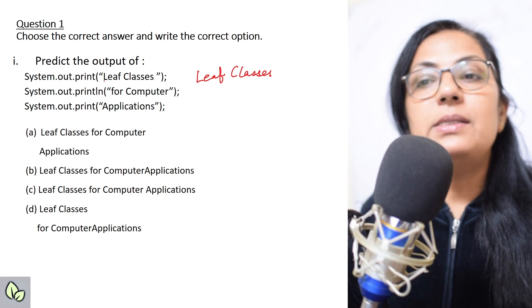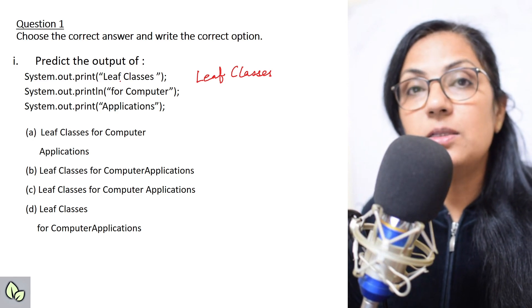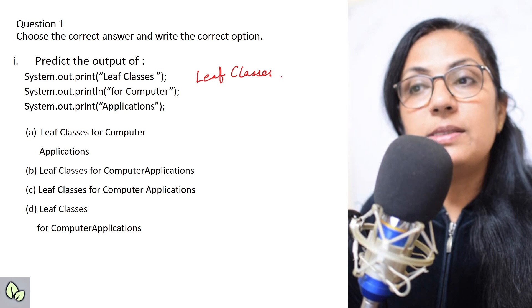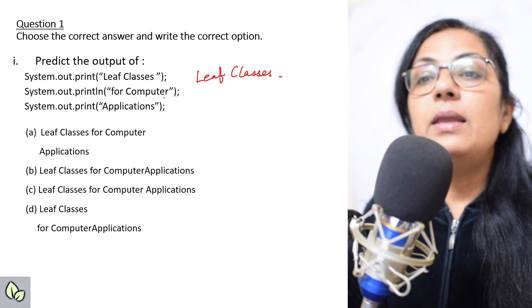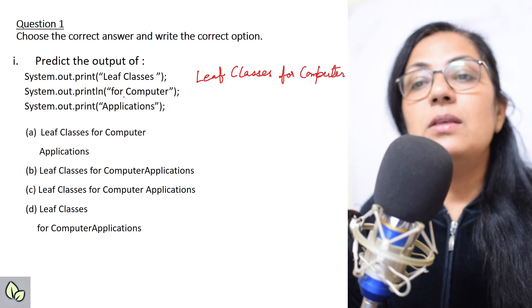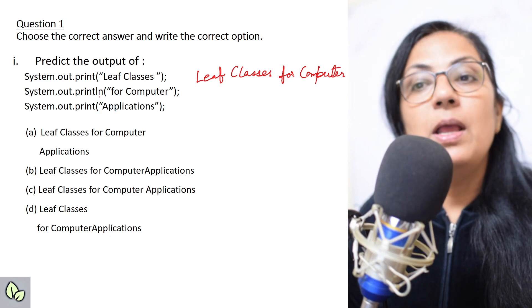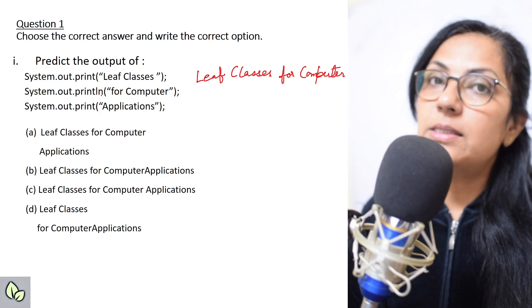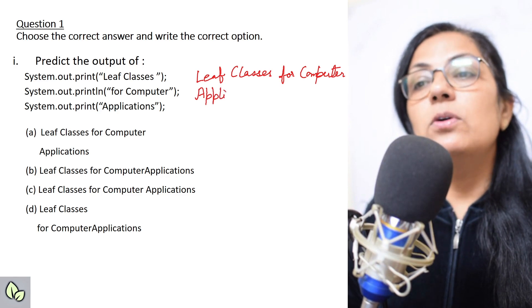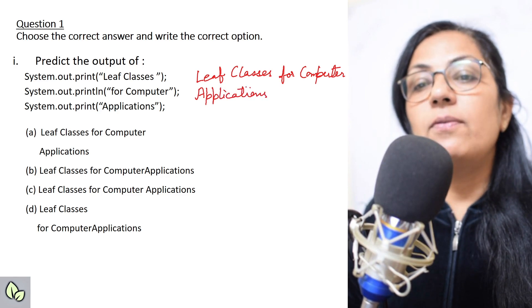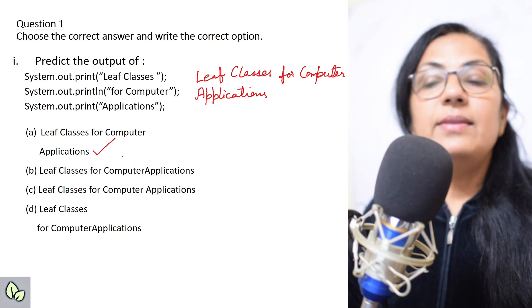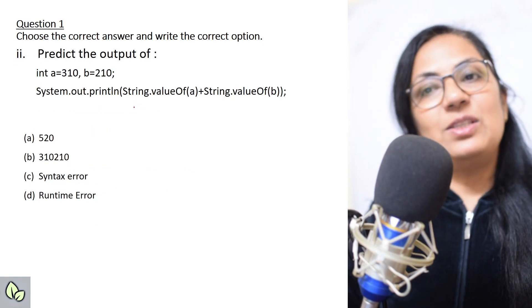The first statement uses print, so after displaying the result the cursor remains on the same line. Then it prints "for computer" using println, so after displaying, the cursor is shifted to the next line. Then "applications" is printed. So the answer is "leave classes for computer application" — option A is the correct answer.